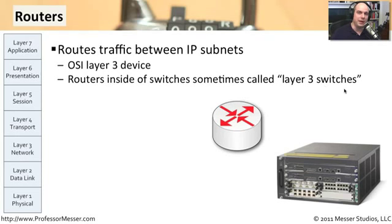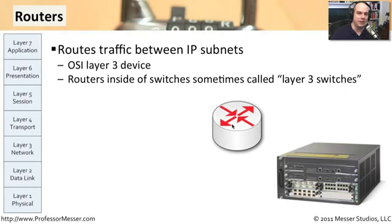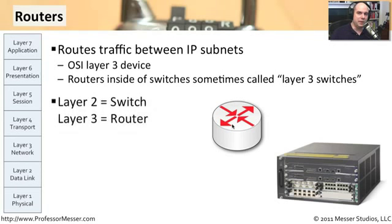A layer three switch is really talking about a router that is embedded or installed inside of a switch. You're not really switching at layer three — you're really routing at layer three. You'll also see this represented on network diagrams as arrows pointing in different directions. So if you ever see that 90-degree angle on an arrow going through a diagram, it's probably referring to a router. If you ever hear the term layer two, you can think switching. If you hear the term layer three, you can think routing.